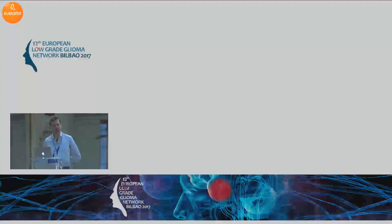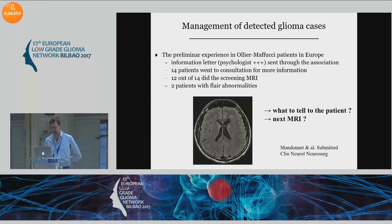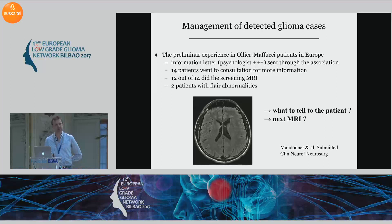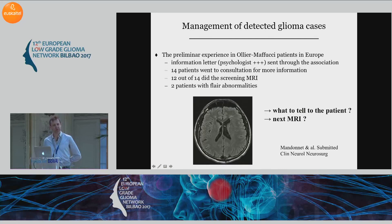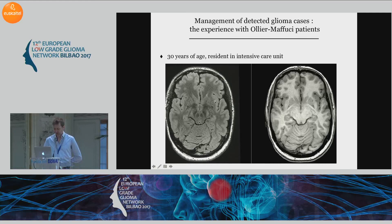Not to say that this is easy, because we have some experience at a very small scale in Ollier-Maffucci patients — a very rare disease where the risk of glioma is greatly increased compared to the normal population. In France, we started a screening in this targeted population. And indeed, it's not so easy to decide what you should tell the patient when you discover a small hypersignal on the FLAIR — bilateral — and it's not so easy to discuss with the patient these kinds of discoveries.